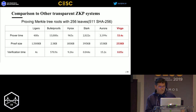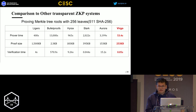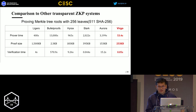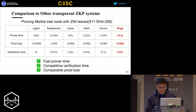Here is a comparison of Virgo to all other existing transparent zero-knowledge proof systems — transparent meaning no trusted setup. The experiment's result is for proving a Merkle tree with 256 leaves, which requires a total of 511 hash function evaluations using SHA-256. We build a circuit and run experiments on it. For prover time, Virgo is fastest — at least one order of magnitude faster than all existing systems. The verification time of Virgo is also very competitive: only a little bit slower than STARK but faster than all other existing systems. And the proof size of Virgo is comparable.